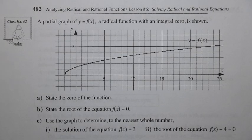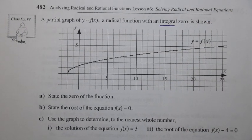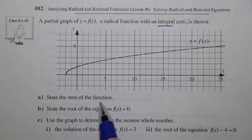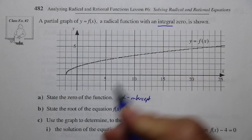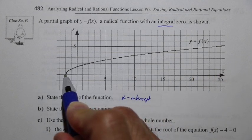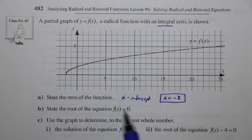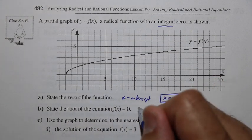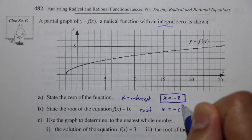Class example two: we have a partial graph of y equals f of x, a radical function with an integer zero. Let's state the zero of that function. The zero of a function corresponds with the x-intercept of the graph. Looking at the graph, x equals negative 2 is the zero of the function. For the equation f of x equals 0, the root is the same as the x-intercept and the zero, so the root is x equals negative 2.